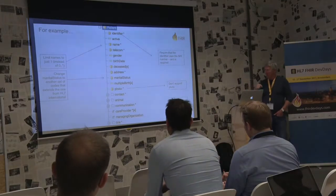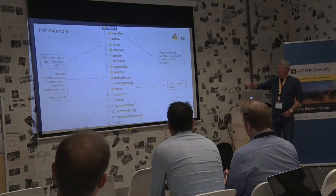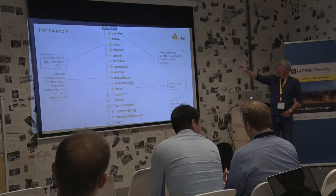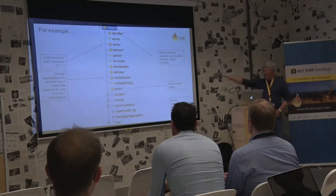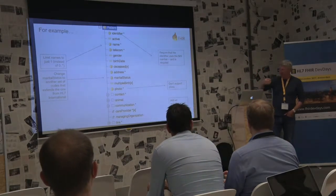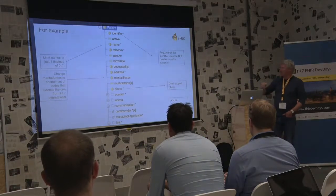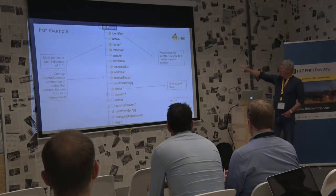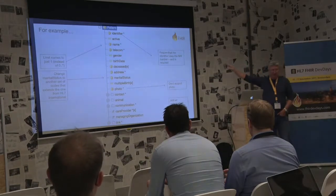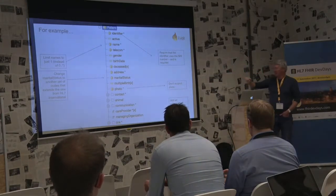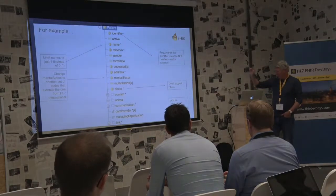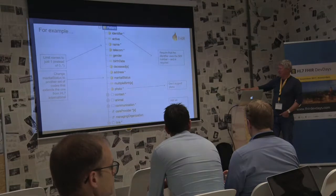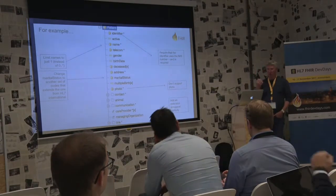Here are some examples based on a patient resource. You can see that on the left-hand side the name is optional or multiple — you might want to say you can only have one name. Marital status is coded — you might have a different set of marital statuses in your domain. The identifier is multiple — you might want to specify a particular national identifier, which is one of the most common uses. You might want to say that at least one identifier must be the national identifier. You might want to say you don't support photos, and you might want to add an extension.